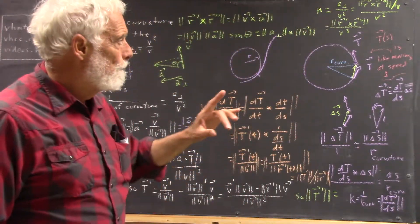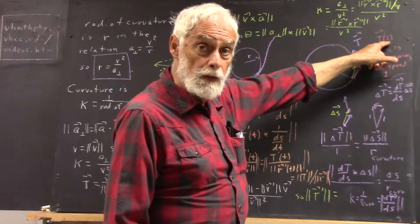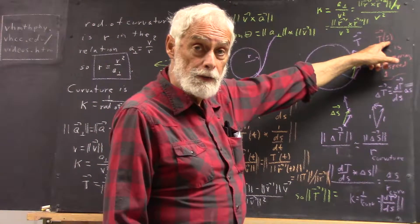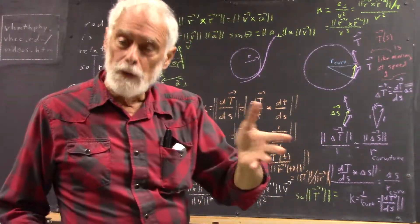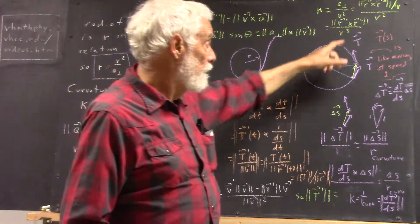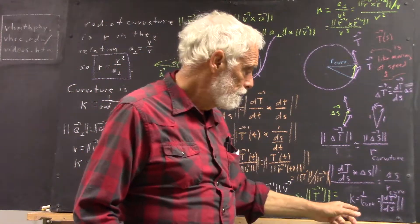So by parameterizing our unit tangent vector in terms of arc distance, if the arc distance is covered at one unit per second, then the derivative of our unit tangent vector is just the curvature.